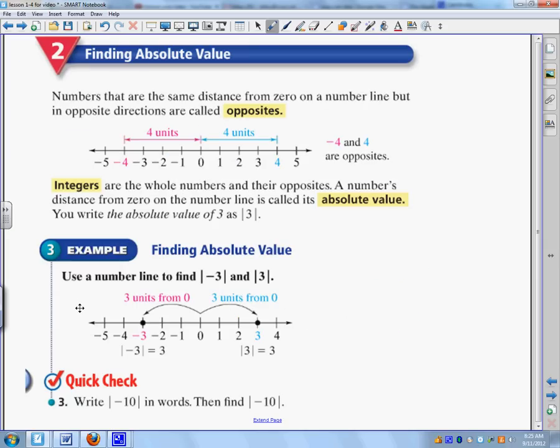Next, finding absolute value. So here are three key terms. So you're going to want to write these in your notes. Opposites. Opposites are numbers that are the same distance from 0 on a number line. So like 4 and negative 4 are opposites.